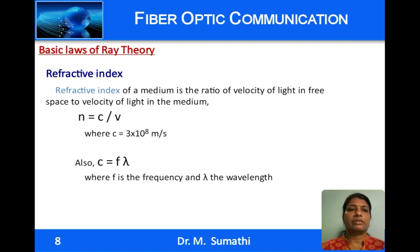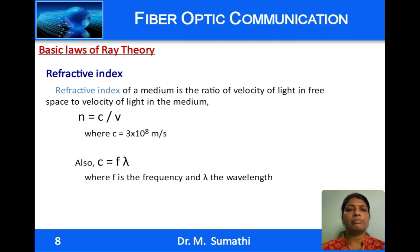Looking into some of the basic laws of ray theory, first we look into the definition of refractive index. The refractive index of a medium is the ratio of the velocity of light in free space or air to the velocity of light in the medium. The velocity of light in any medium decreases as the density of the medium increases, so the refractive index is equal to 1 for free space and greater than 1 for other materials.